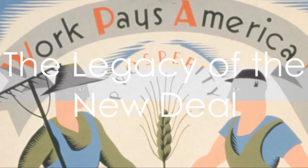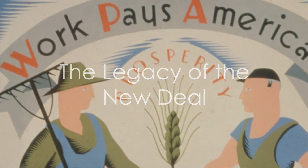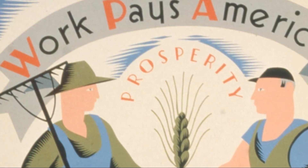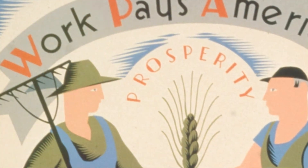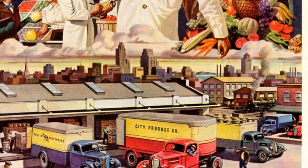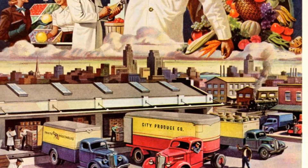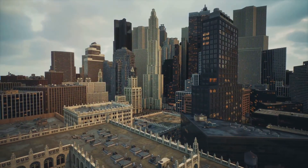The New Deal's legacy endures in institutions like the SSA, FDIC, and SEC, safeguarding Americans' economic security. From the depths of the Great Depression to the heights of the post-war boom, this era reshaped America's economic landscape, leaving a lasting imprint on the nation's policies and psyche.